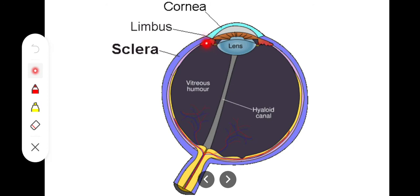Near the limbus there runs a canal at the deeper aspect of the sclerocorneal junction, called the canal of Schlemm. The aqueous humor in the anterior chamber drains into the venous sinuses through this canal of Schlemm.